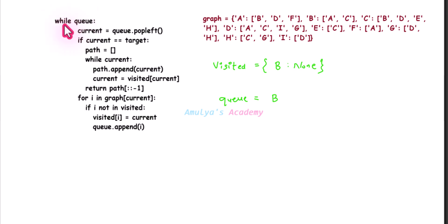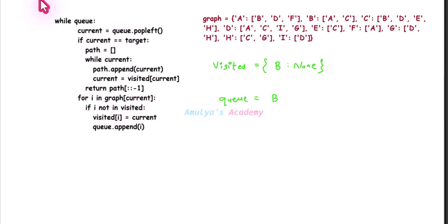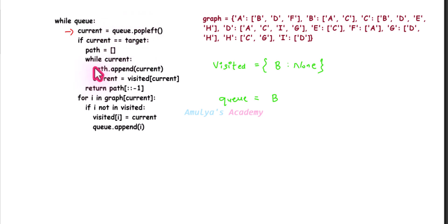Next part of the code is while queue — let's check whether the queue is empty or not. If the queue is empty it evaluates as false and the while loop won't execute. But here queue is not empty, B is present, so it evaluates as true. The first statement in the while loop is current equals queue dot pop left, so B is popped and current becomes B.